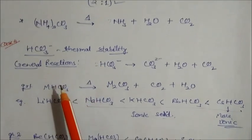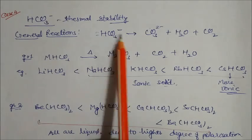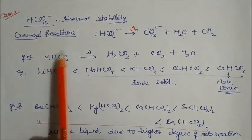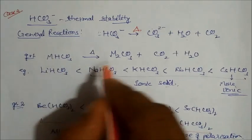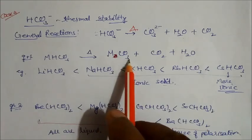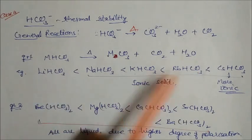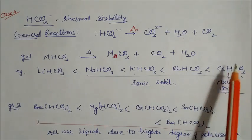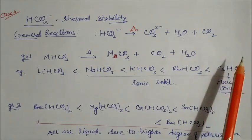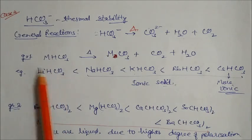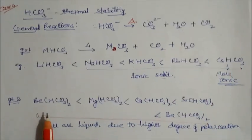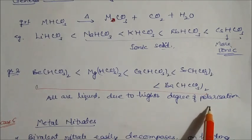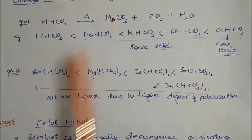Now for bicarbonates: the general reaction of bicarbonate ions on heating gives carbonate, water, and carbon dioxide. For Group 1 elements, MHCO₃ on heating gives MCO₃ plus CO₂ plus H₂O. Thermal stability increases down the group — lithium bicarbonate is least stable while cesium bicarbonate is most stable. For Group 2 bicarbonates, all are almost liquid and have higher degree of polarization, making them somewhat difficult to decompose.